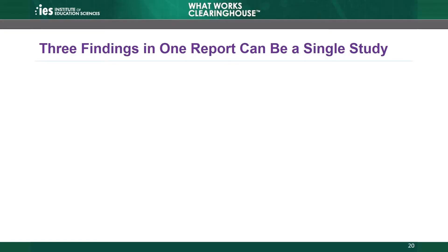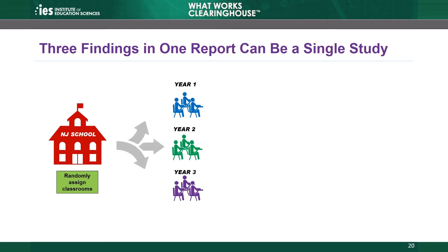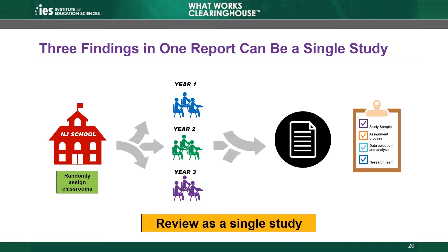Let's consider a few scenarios to help clarify how the WWC defines a study. First, consider a manuscript that presents a finding based on combining data across related samples, such as those from multiple time periods within the same school. For example, imagine that the researchers randomly assign classrooms within a middle school to conditions, and the same intervention is implemented in the intervention classrooms over several school years. The study examines the effectiveness of the intervention in three consecutive cohorts of students in the middle school, measuring effectiveness based on each cohort separately but using the same analytic procedures. In this case, the WWC would review all the findings in the manuscript as a single study because they share all four of the study characteristics.